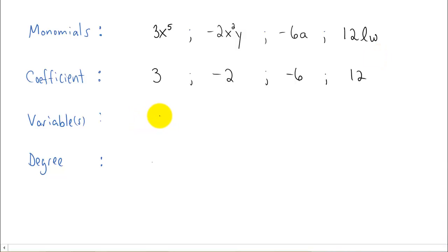Now let's look at the variables. The variable in our first monomial is x. We have two variables in our second monomial, x and y. We just have one variable in our third monomial, and it's a. And the two variables in our last monomial are l and w.